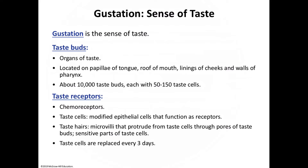Taste involves gustatory cells and the process of gustation. Taste buds are special organs of taste that look like orange sections on the surface of the tongue, with tiny elevations called papillae. There are approximately 10,000 taste buds, located mainly on the tongue, though a few are also scattered on the soft palate, inner cheeks, pharynx, and epiglottis. Most taste buds are found in the papillae — peg-like projections on the tongue mucosa.